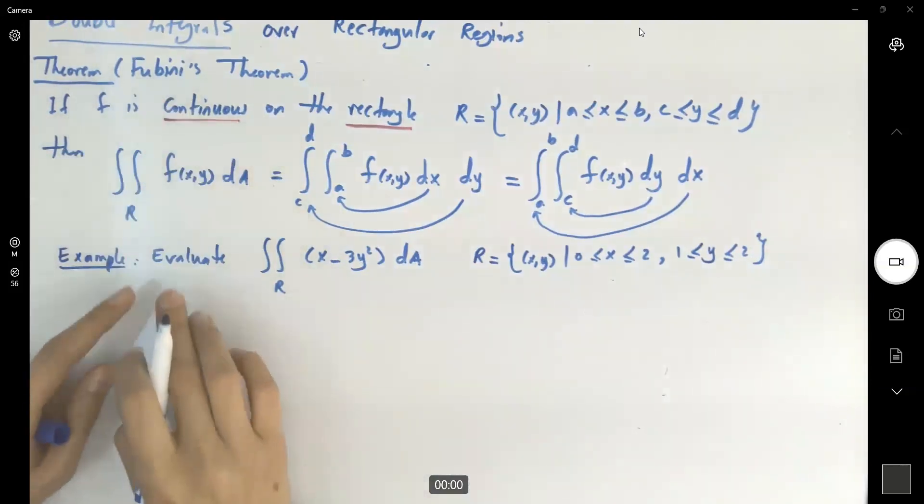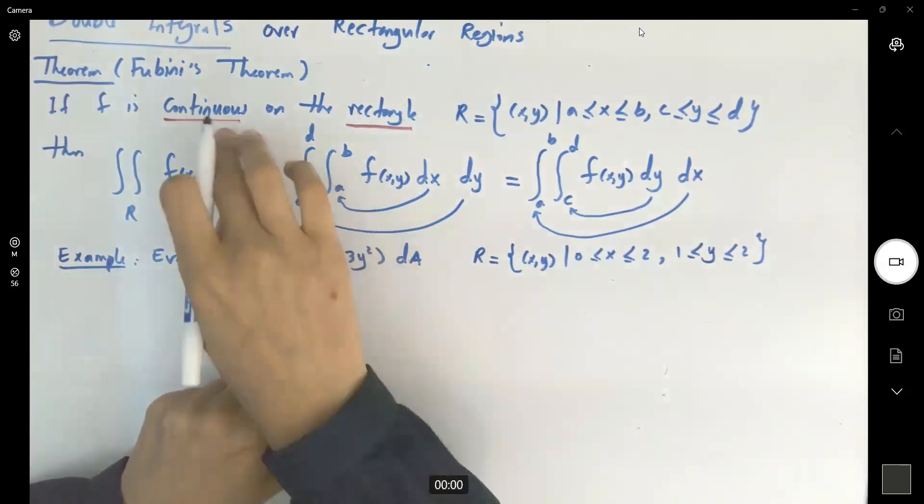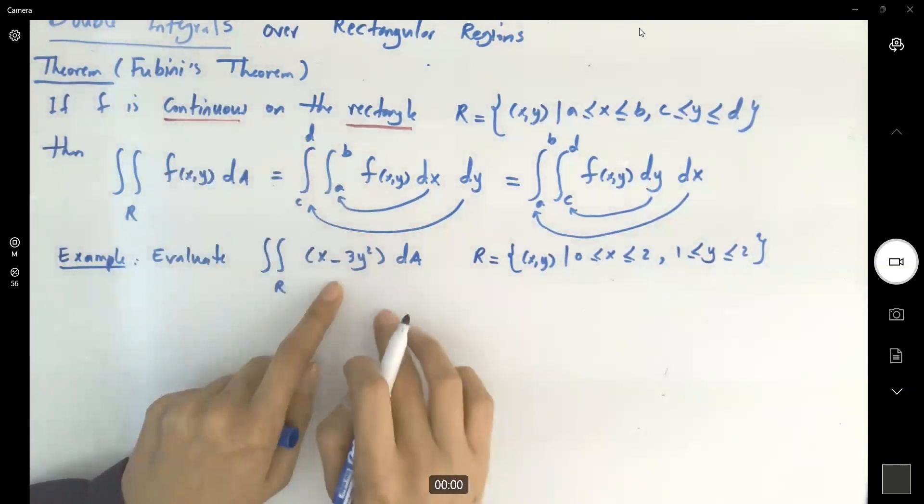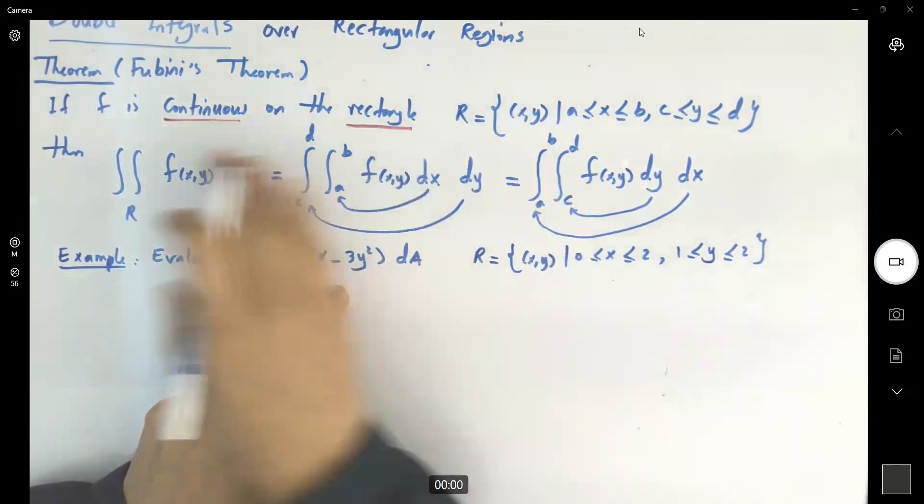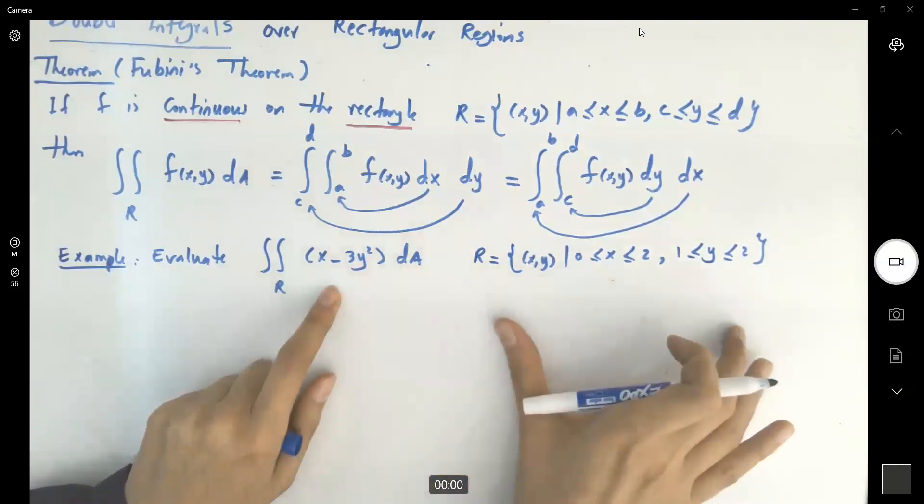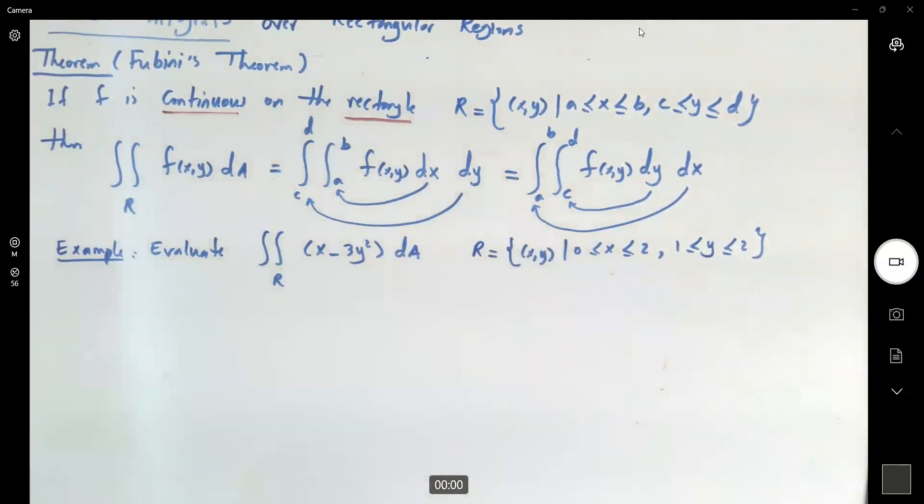Let us check the theorem. Does this function satisfy the condition of the theorem? Is this a continuous function? Of course it's a continuous function. It's continuous everywhere. It's in the form of a polynomial function, it's continuous. And you have a rectangular region. Since this guy is continuous everywhere, it's definitely continuous on the region. You can either apply the first method or the second method. It doesn't matter. Both of them give you the exact same value.